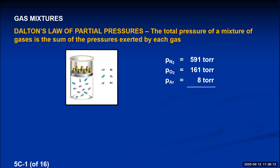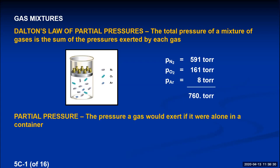Dalton's Law of Partial Pressures states that if you know the pressures of each individual gas in a mixture, their pressures will add up to make the total pressure of the gas mixture. The pressure exerted by one individual gas in a gas mixture has a unique name — it's called a partial pressure, and it is the pressure the gas would exert if it were alone in a container.